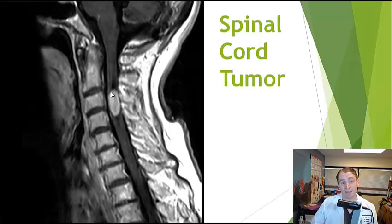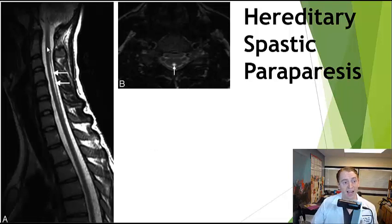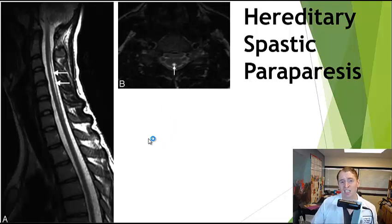This is an example of a spinal cord tumor — in this case an ependymoma opening the central canal — which can cause slow onset of symptoms and neuropathic pain. This is actually a genetic condition called hereditary spastic paraparesis, where the finding is a posterior location of the central canal with dilation. This condition causes very slow onset over years of weakness in the legs and spasticity, or increased muscle tone.